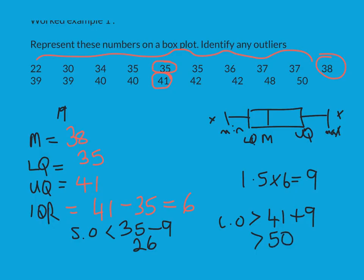So if I look at my data at the top here, no numbers are more than 50, so 50 is fine, but one number is less than 26. So this is my only outlier. My outlier is 22, so my minimum other number would be 30.